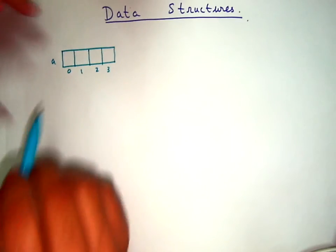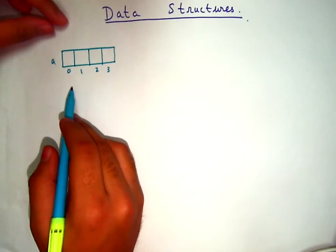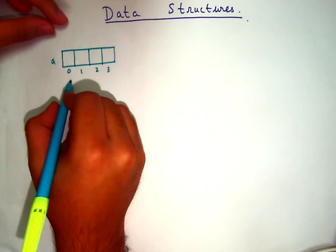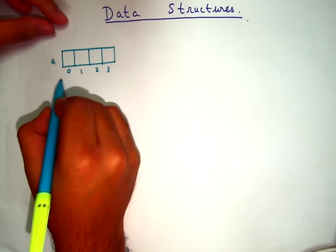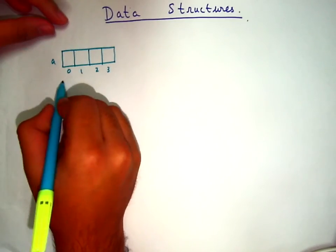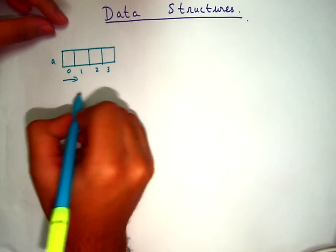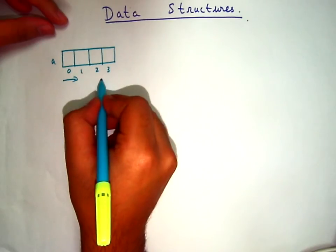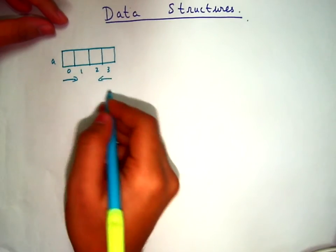First we start with an array. In an array we can access the data in any way we want. Suppose we want to fill in the spaces of the array in this direction or if we want to fill in the elements in this direction, we can do both ways.